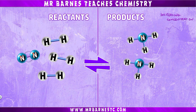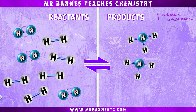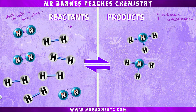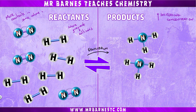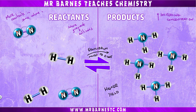Moving on to concentration: if you increase the concentration of your reactants you are putting more hydrogen and nitrogen molecules into the same volume, meaning there will be more frequent collisions. More frequent collisions means more reactions occurring, so you move the equilibrium to the right and increase the amount of ammonia made. This also increases the rate of reaction, so you get a higher yield and get it quicker — a win-win.